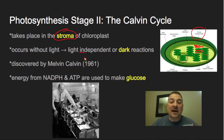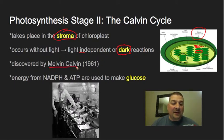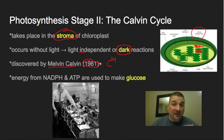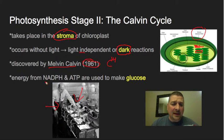We call these the light-independent reactions. Back in the 90s they were called the dark reactions, but we've since renamed them the Calvin cycle because they don't have to happen in the dark — they just don't need light. This was discovered by Melvin Calvin in 1961, the same year he won the Nobel Prize for chemistry. Using carbon-14 as a radioactive tracer, he followed the movement of carbon through the stoma of the leaf and eventually into sugar.